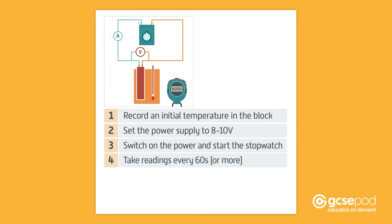4. Take and record readings from the ammeter, the voltmeter, and the stopwatch. 5. You should take readings every 60 seconds, or more frequently, as determined by your teacher. Continue making recordings until the temperature of the block has risen by 10 degrees Celsius.